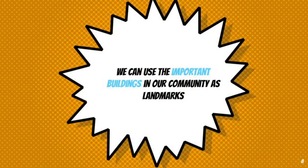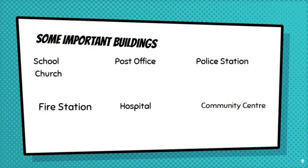What else could we use when we are given directions? Yes, we can also use landmarks — very good! Now, what are some of the important buildings in your community? You see a school, a post office, the police station — what else? The hospital, very good, a church, and when there's a fire we know we have to have the fire station, the community center, amongst others. Very good, boys and girls — well done!